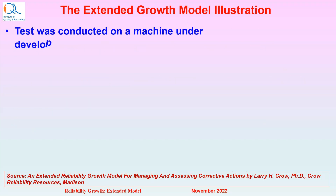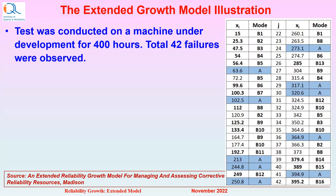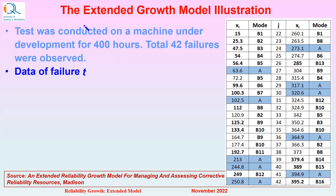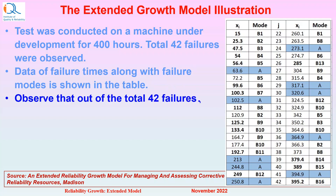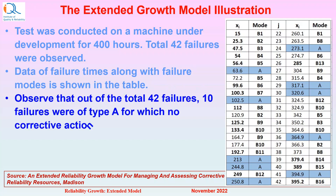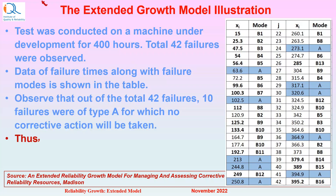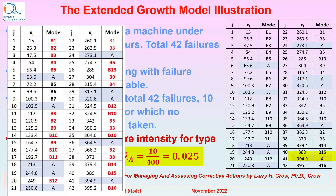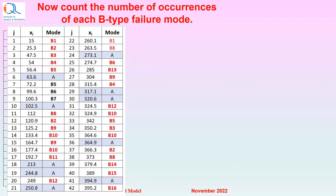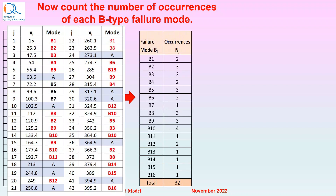A test was conducted on a machine under development for 400 hours. A total of 42 failures were observed during the test. Data of failure times along with the failure modes is shown in the table. Out of these 42 failures, 10 failures were of Type A for which no corrective action was planned or taken. Thus, the constant failure intensity for Type A failure modes will be lambda A = 10 divided by 400, which equals 0.025. Now count the number of occurrences of each of the B-type failure modes as seen in the table, and these occurrences total up to 32.